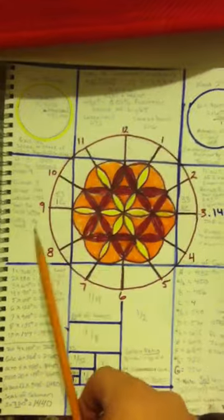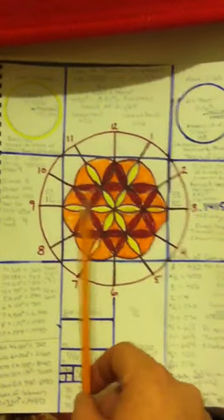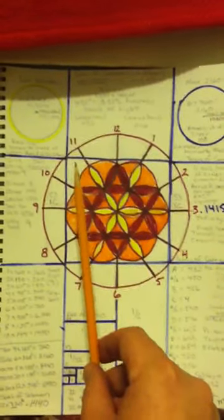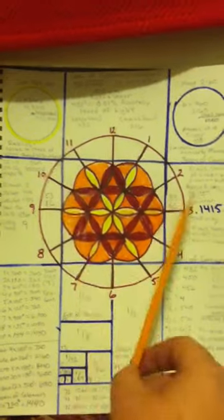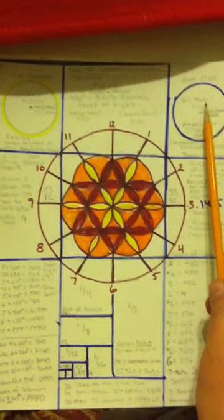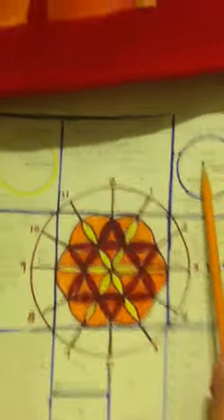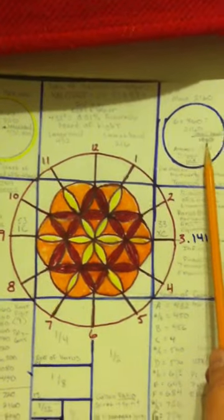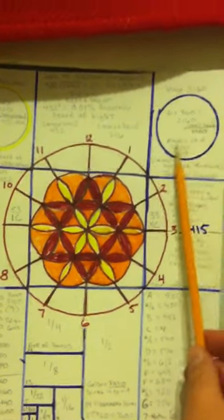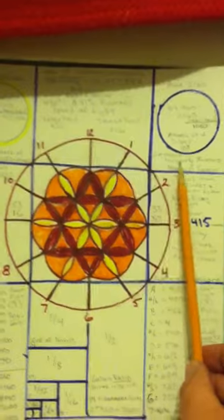The cube itself has 360 degrees, four 90 degree angles. And once you open that box up, you get six times 360, which is 2160, which happens to be the diameter or the heavenly measurement of the moon.